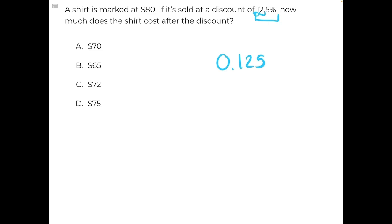And then you could recognize the common fraction to decimal conversion, 0.125, is equal to 1 eighth. So we can represent this percentage, this discount, as 1 eighth of the original price.